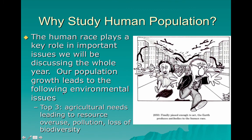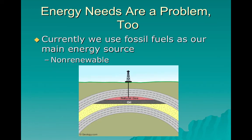What are the three key environmental challenges we face because of our growing population? First, agricultural needs that lead to resource overuse. Second, the pollution we generate. Third, loss of biodiversity. Those are the top three things we're going to focus on. Energy needs are a problem as well — our main source of energy is fossil fuels, which is a problem because it's non-renewable.